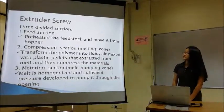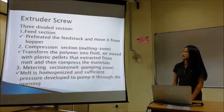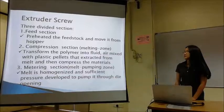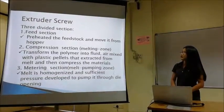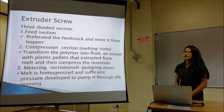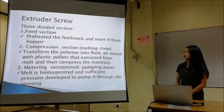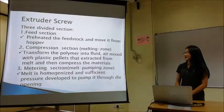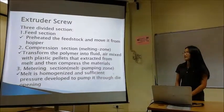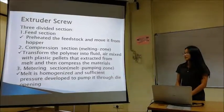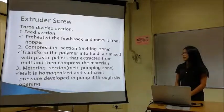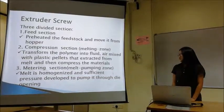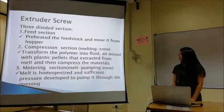For an extruder screw, it can be divided into three sections. The first one is the feed section, the second one is the compression section, and the third one is the metering section. The feed section is used to preheat the feed stock and move it forward. The compression section transforms the polymer, removes air mixed with plastic pellets, and compresses the material. The metering section is also known as the melt pumping zone, which develops sufficient pressure to pump the melt through the die opening.